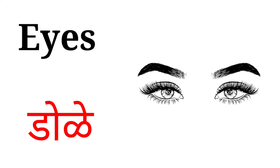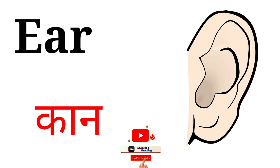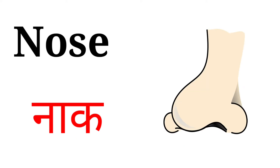Eyes, eyes means dole. Ear, ear means kaan. Nose, nose means naak.